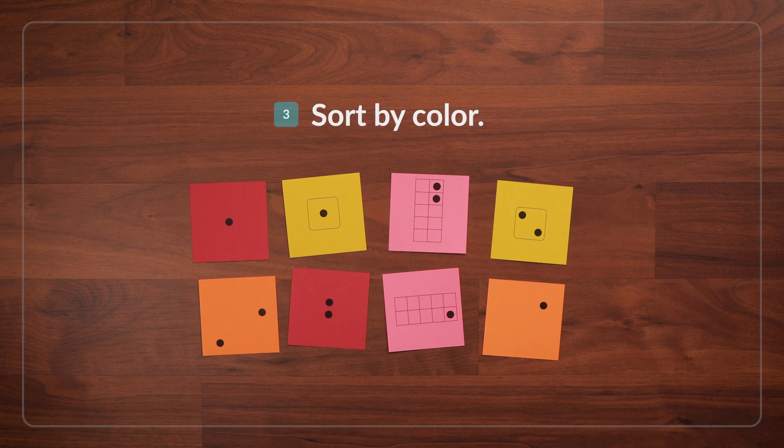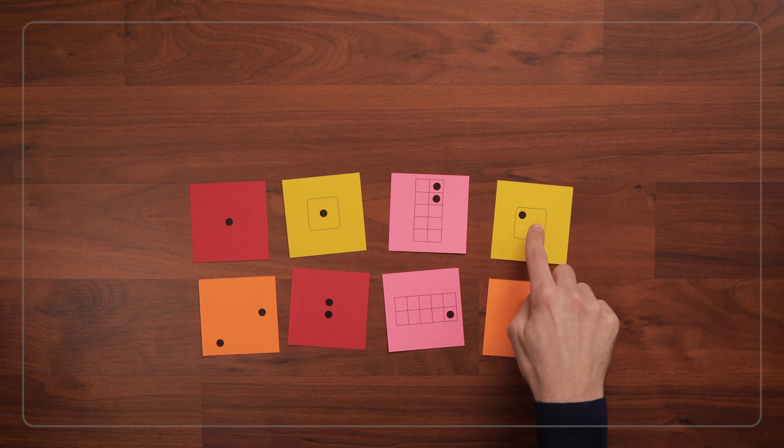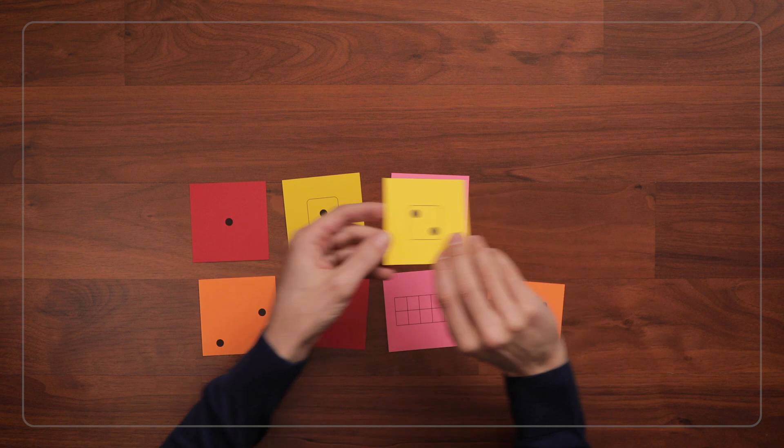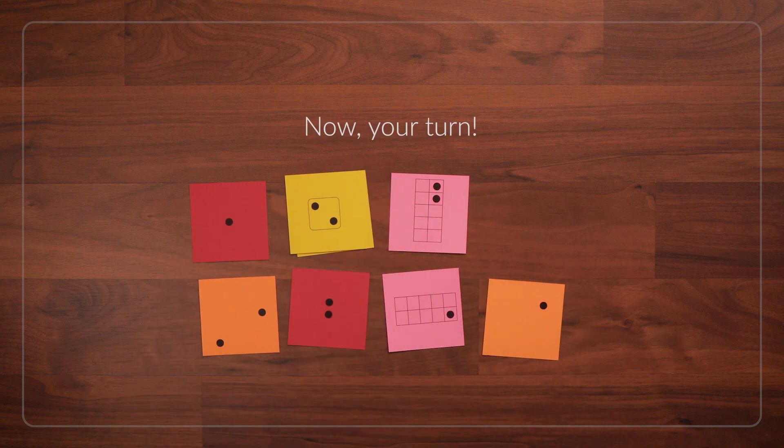Then when you're ready, sort the cards by color. You can say, let's sort by color. I have a yellow card. Can you find a card that is also yellow? Let's put it in this pile. Now can you pick up a card and tell me what color it is?